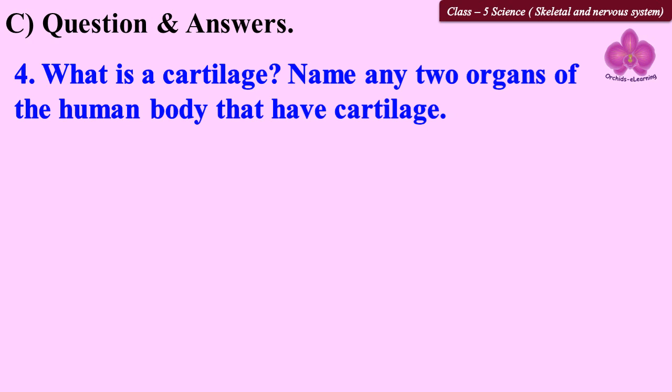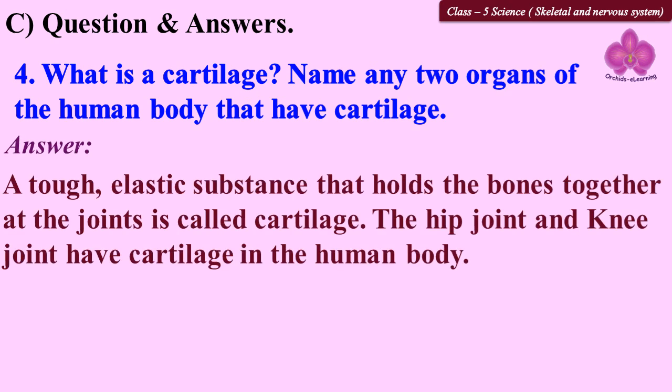Question 4: What is cartilage? Name any two organs of the human body that have cartilage. A tough, elastic substance that holds the bones together at the joints is called cartilage. The hip joint and knee joint have cartilage in the human body.